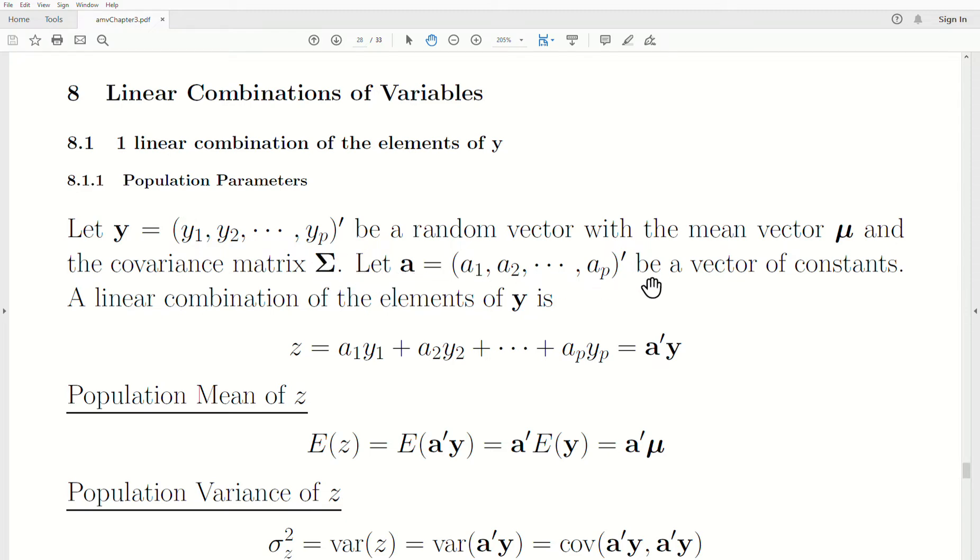Now, let A be a vector of constants. Then a linear combination of the elements of Y is this: you take the first variable times a₁ plus the second variable times a₂, all the way to the p-th variable times the constant aₚ. Now, that's our new variable Z. But it can be represented in matrix form or vector form, A transpose Y. So, this is a vector product which represents this linear combination.